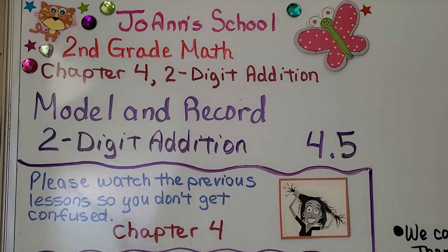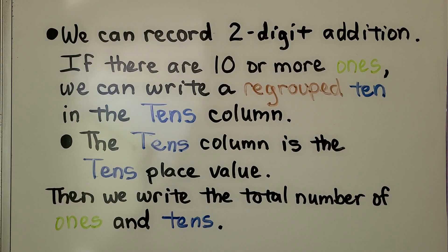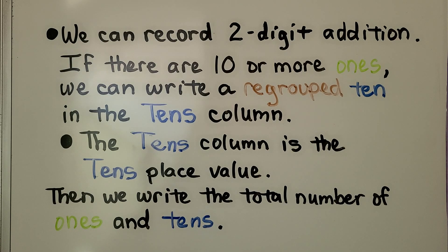Lesson 4.5: Model and Record Two-Digit Addition. We can record two-digit addition — that means we can write it. If there are ten or more ones, we can write a regrouped ten in the tens column, which is the tens place value. Then we write the total number of ones and tens.